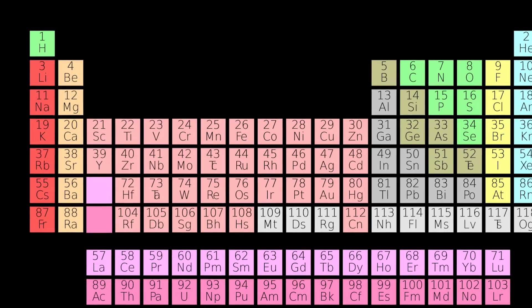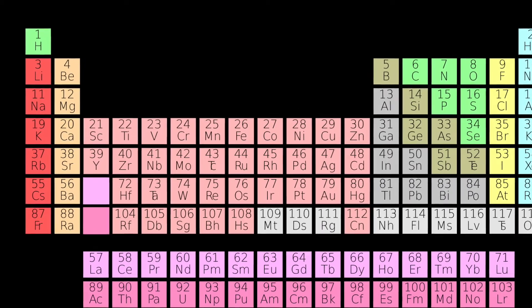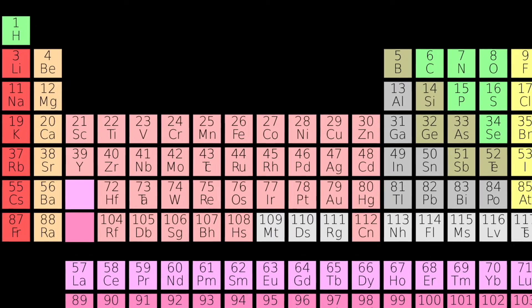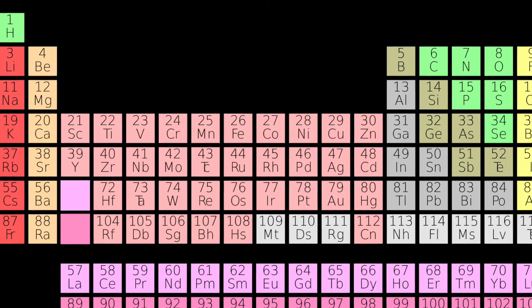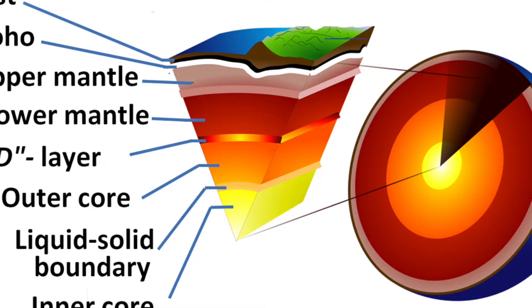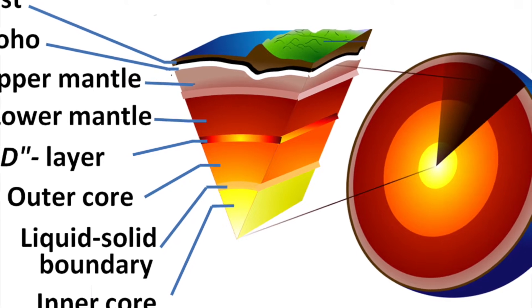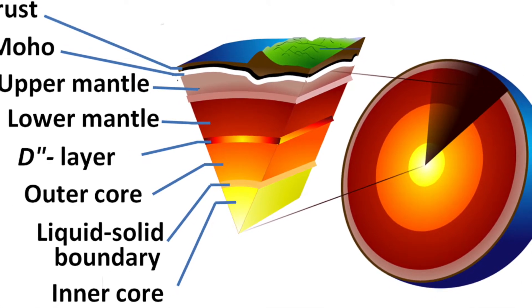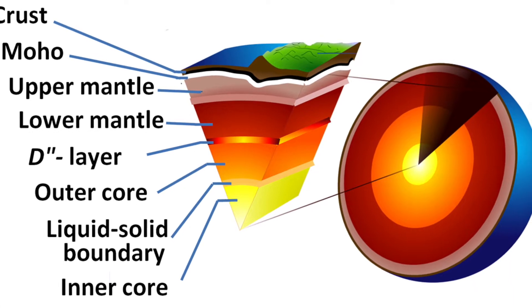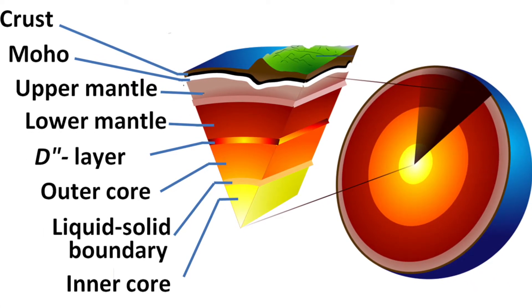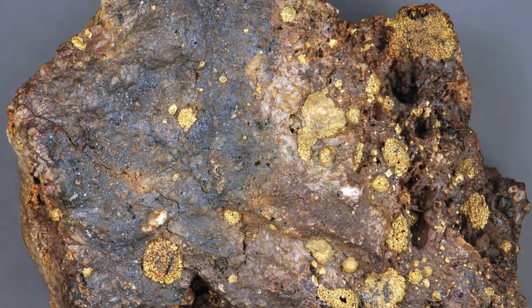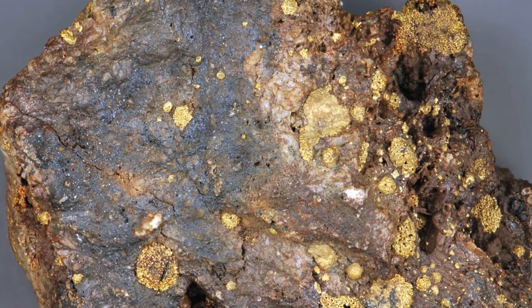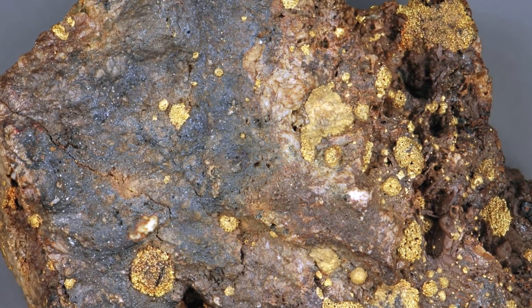Hey, it's Chris Stark and today we're looking at extracting metals. First of all, we need to know where metals actually come from. Metals are found in the earth's crust and most of them are found chemically combined with other elements, especially oxygen. This means that the metal must be chemically separated before you can use it. If there is enough metal in a rock to make it worth extracting, it is called a metal ore.